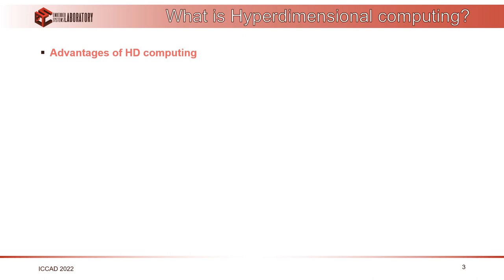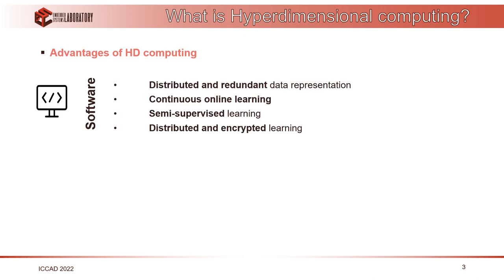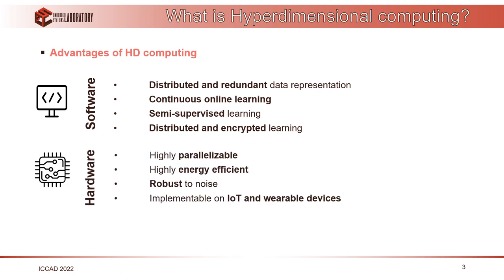All of this enables several advantages of HD computing on both the software and hardware side. From the software side, it represents distributed and redundant data representation, and more importantly, enables continuous online learning — meaning we don't have to save all previous data to retrain the model when we have new samples; we just add them to the model vectors. It is also very easy to implement semi-supervised learning or distributed and encrypted learning. On the hardware side, it is highly parallelizable and energy efficient. Because of its distributedness and redundancy, it is also robust to noise, making it very interesting for IoT and wearable devices.